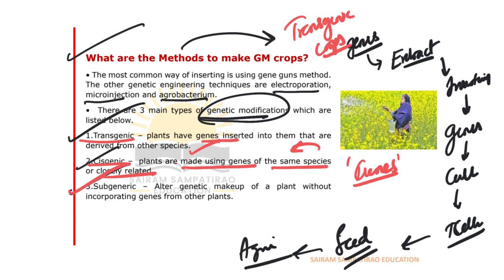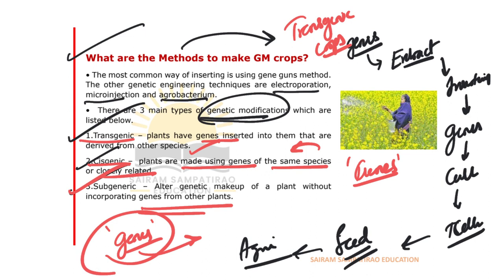Subgenic modification means altering the genetic makeup of a plant without incorporating genes from other plants — directly altering the genes within the particular plant itself. 'Sub' means inside: the DNA is changed within the plant itself. This kind of method is called subgenic. So the three types are: transgenic, cisgenic, and subgenic.